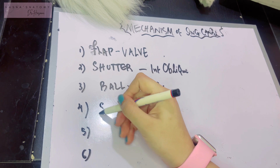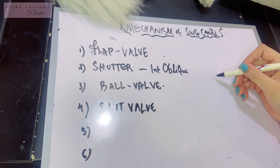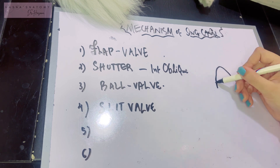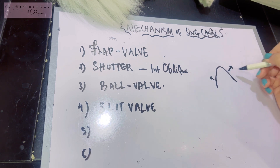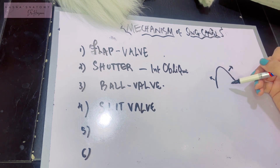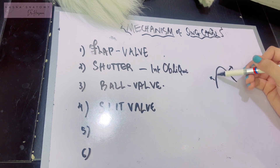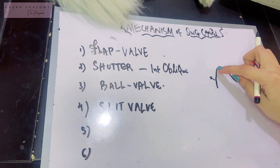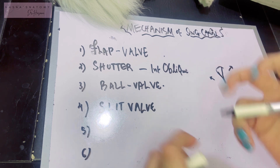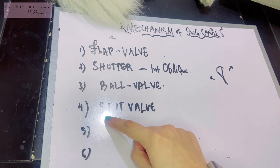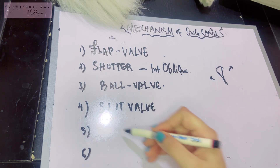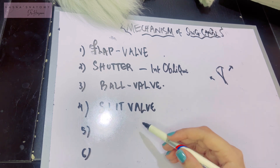The next mechanism is the slit valve mechanism. The superficial inguinal ring, as you recall, is triangular in shape with two crura — the lateral crus and the medial crus. Since the superficial inguinal ring lies in the external oblique aponeurosis, when intra-abdominal pressure is raised the external oblique contracts and the two crura approximate to close the superficial inguinal ring, forming a slit.